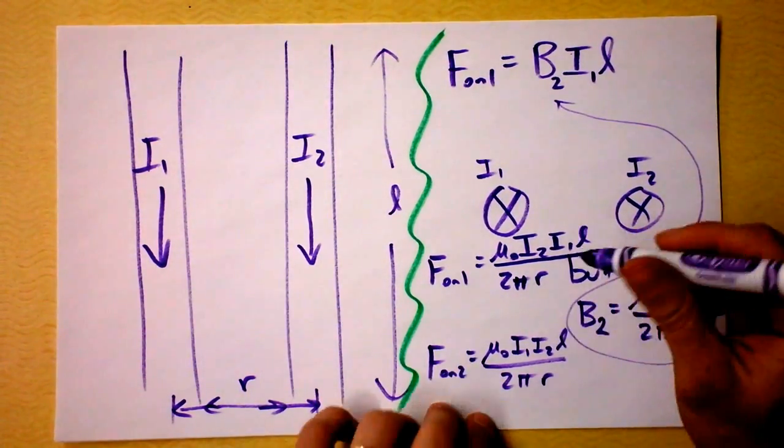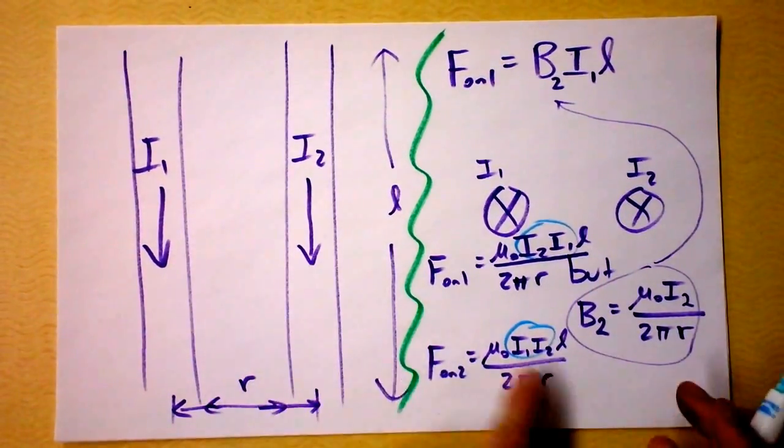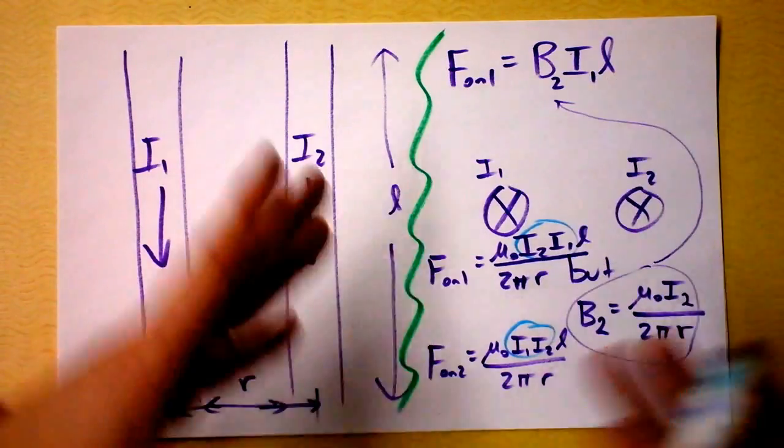I guess that follows the same procedure, and you'll just find that it's μ₀ times I1 times I2 times the length that they are parallel divided by 2π times the distance that they are apart. And of course, multiplication is commutative, and you see that this is the same as that. And so the force on 1 is the force on 2, but they are opposite directions.